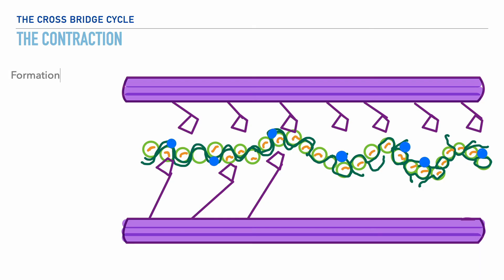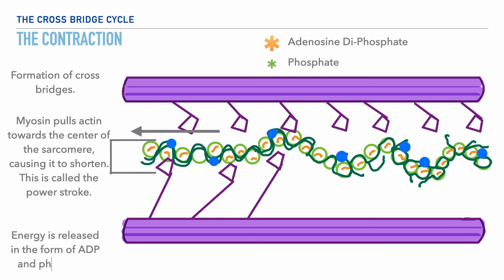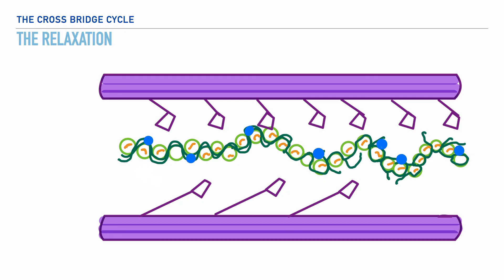The attached myosin head then pulls the actin filament towards the center of the sarcomere, and this is what we call the power stroke. As this occurs, the myosin head releases a form of energy, seen here as ADP or adenosine diphosphate and phosphate. After their release, the myosin head remains attached to actin's active site.